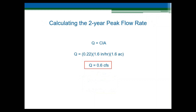Now we finally have all the information needed for the rational method. Our drainage area is 1.6 acres, we calculated a rainfall intensity of 1.6 inches per hour, and we determined a two-year runoff coefficient of 0.22. Multiplying these three numbers together, the resulting calculated two-year peak flow rate for design of our swale is 0.6 cubic feet per second.